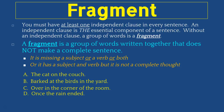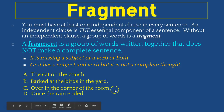Look at letter B: 'barked at the birds in the yard.' Here we have a verb — 'barked' — and we know it barked at birds in the yard, but we don't have a subject. We don't have who barked at the birds. We can assume it was the dog, but it doesn't tell us that. Since we're missing the subject, this is a sentence fragment.